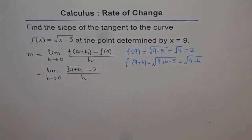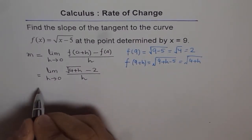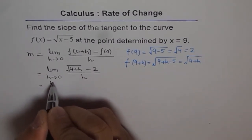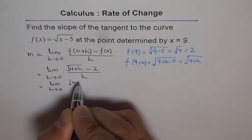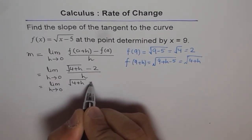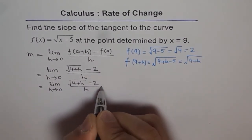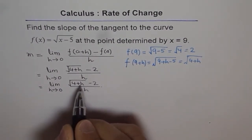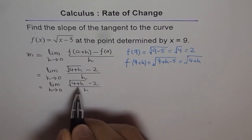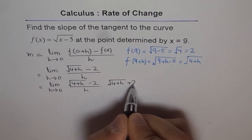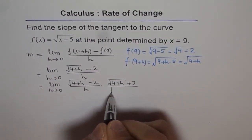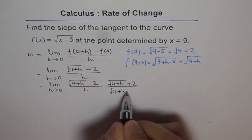Now, this equation has a square root, so to solve it we should rationalize. Rationalization means we multiply and divide by the conjugate. So we multiply and divide by the conjugate of the numerator, which is √(4 + h) + 2, divided by √(4 + h) + 2.